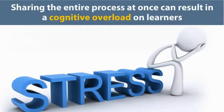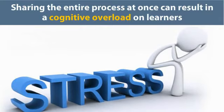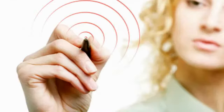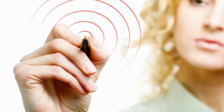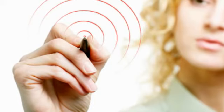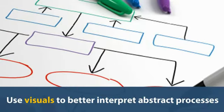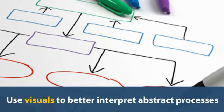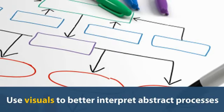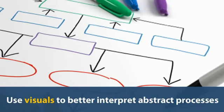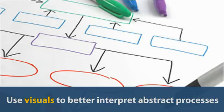It is best to build up the process bit by bit. We at ComLab India have developed process training courses for employees to thoroughly understand and execute business processes. Our team uses interpretive visuals to portray abstract processes. The visual analogy helps learners to gain conceptual understanding.